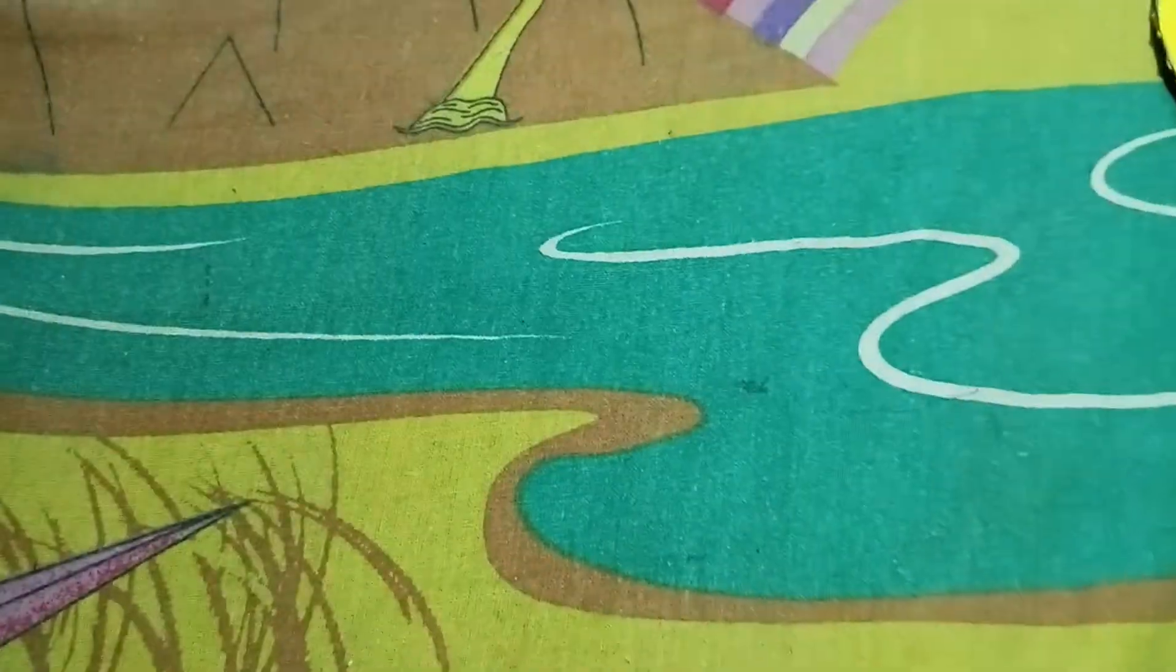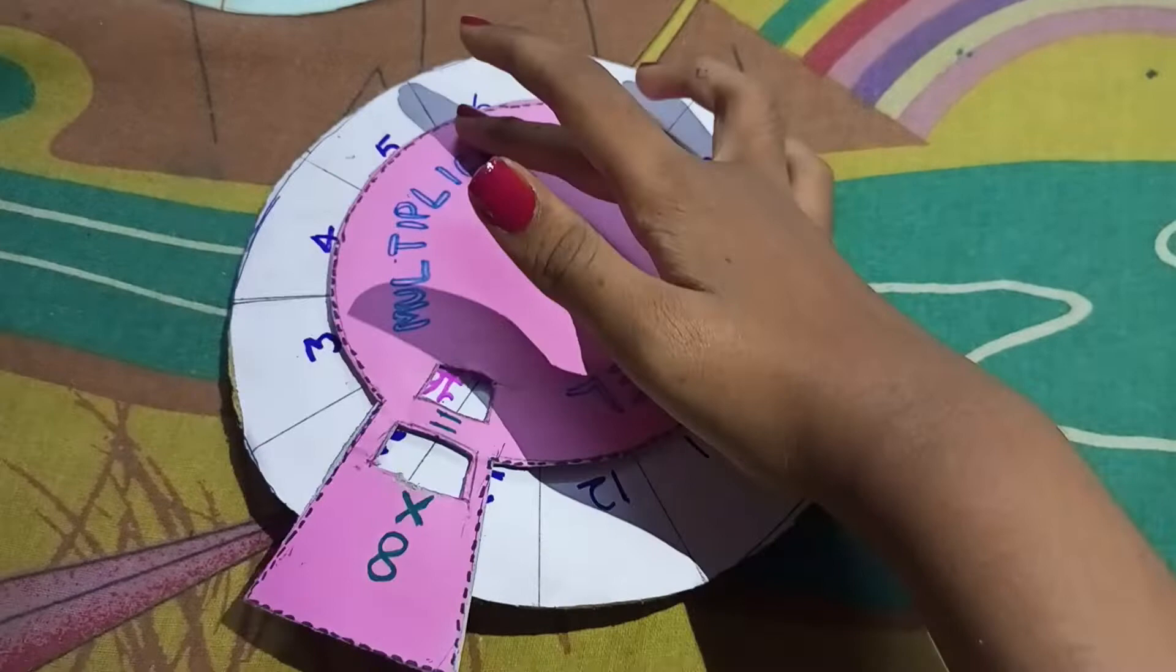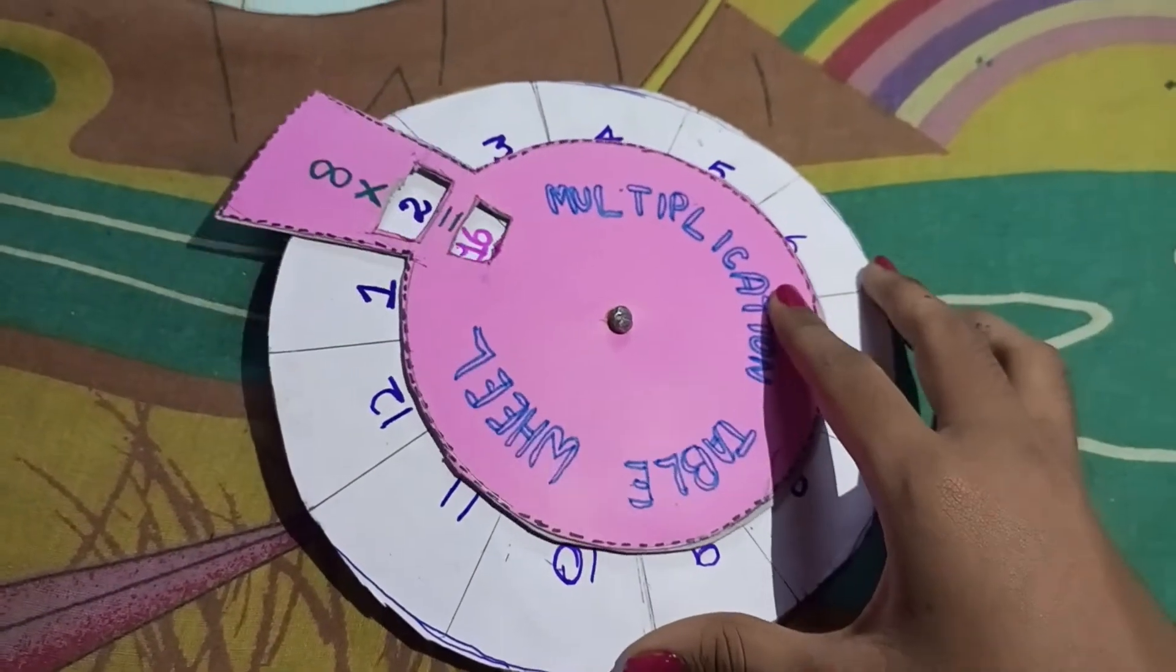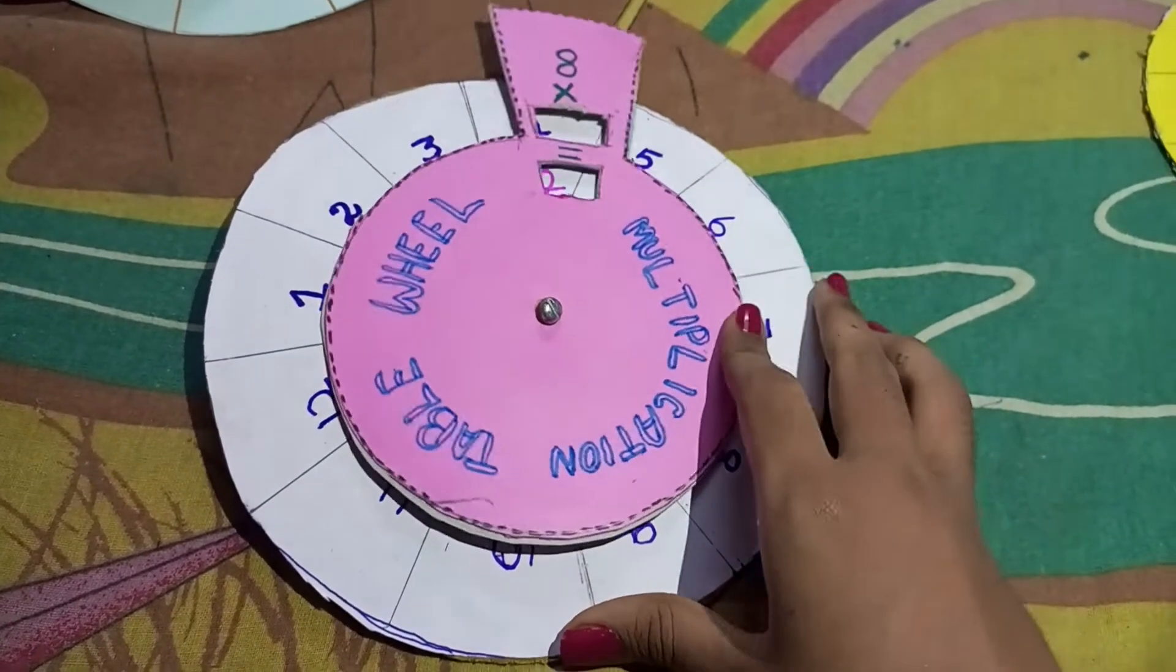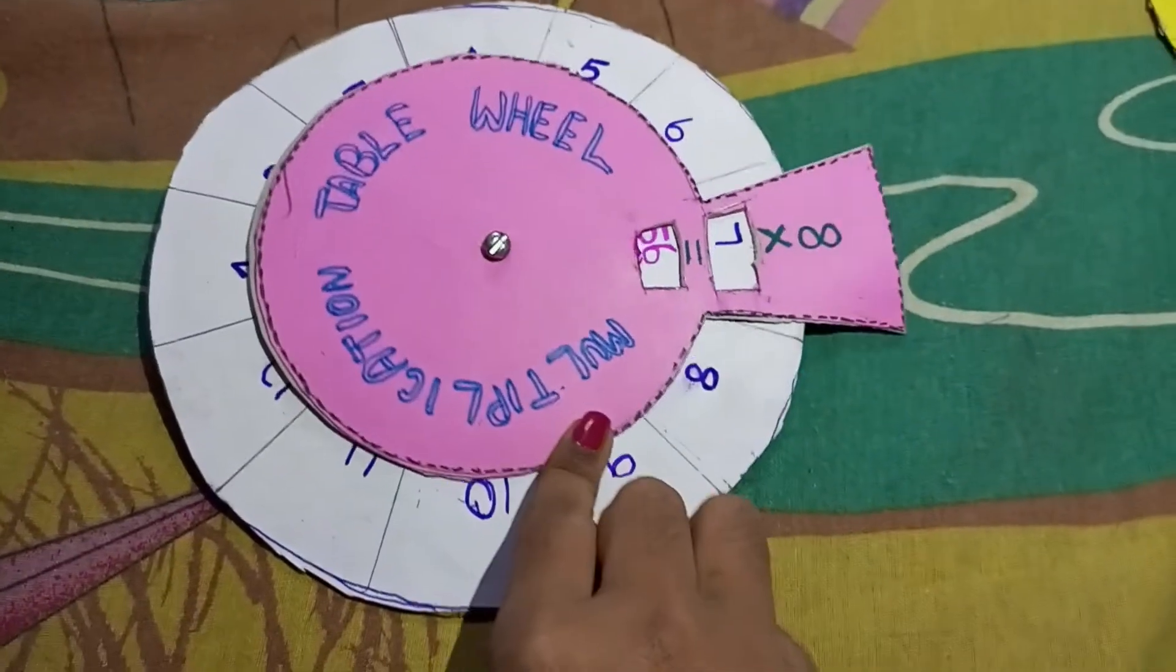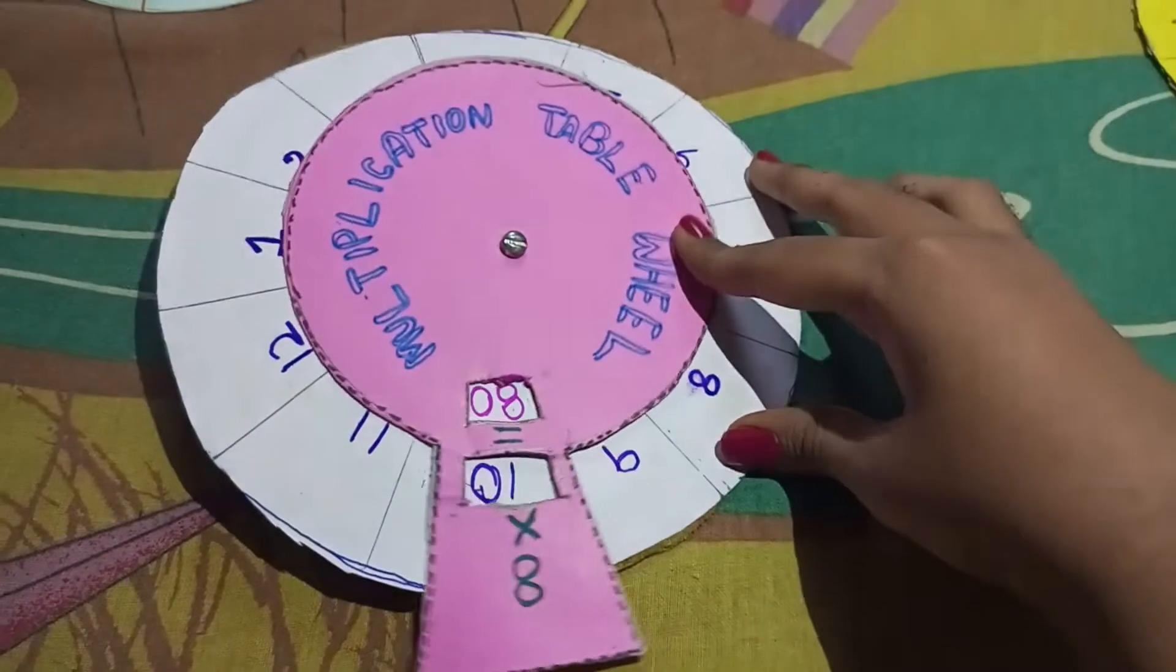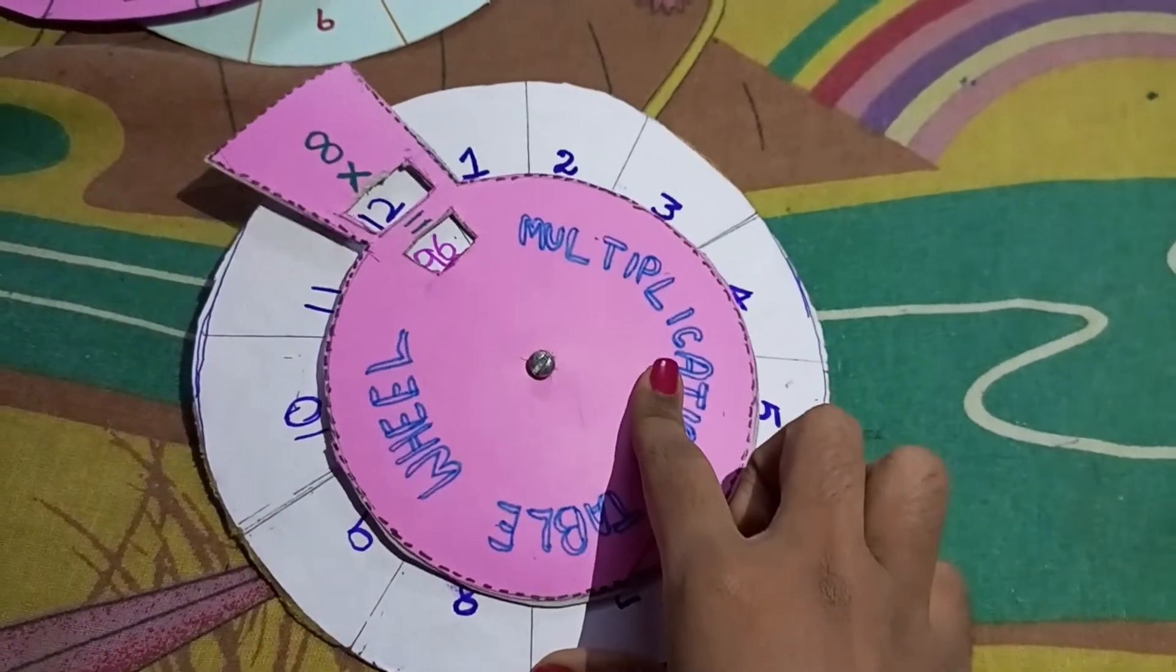So in the chart, next we have 8 table. 8 ones are 8, 8 twos are 16, 8 threes are 24, 8 fours are 32, 8 fives are 40, 8 sixes are 48, 8 sevens are 56, 8 eights are 64, 8 nines are 72, 8 tens are 80, 8 elevens are 88, 8 twelves are 96. So on the chart...